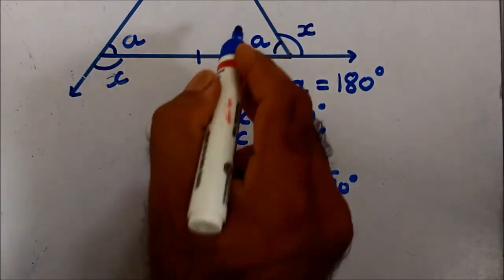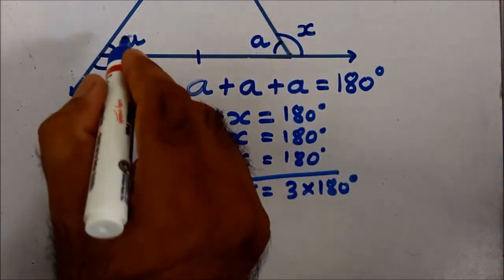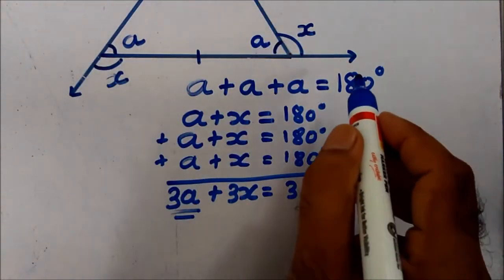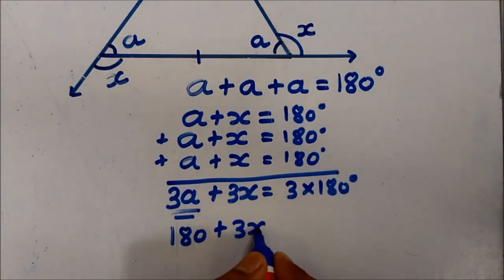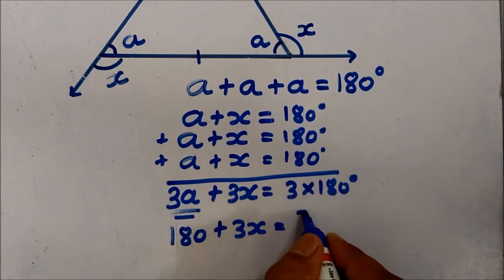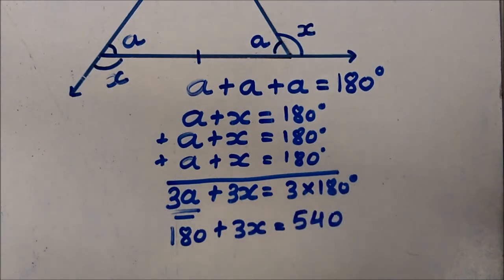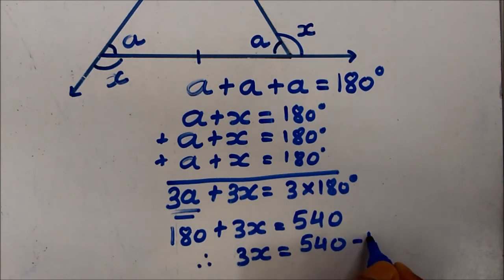And what is 3A? A plus A plus A. 60 plus 60 plus 60 gives us 180. So 180 plus 3x is equal to 540. Therefore, 3x is equal to 540 minus 180. Therefore, 3x is equal to 360 degree.